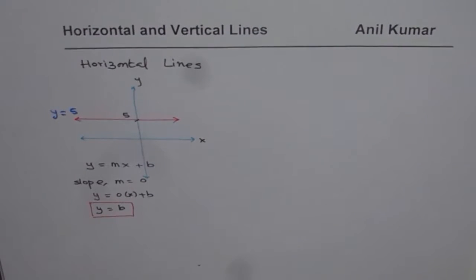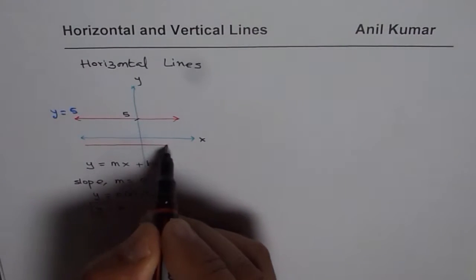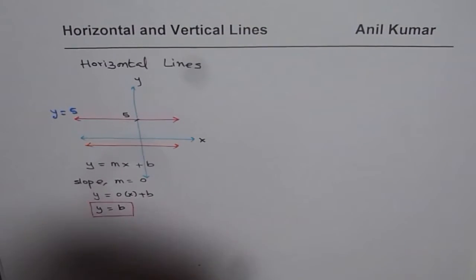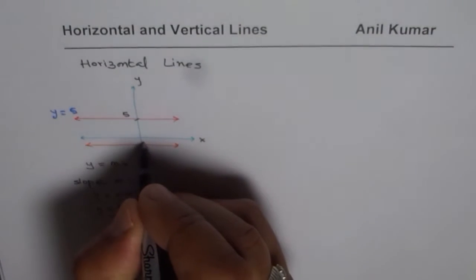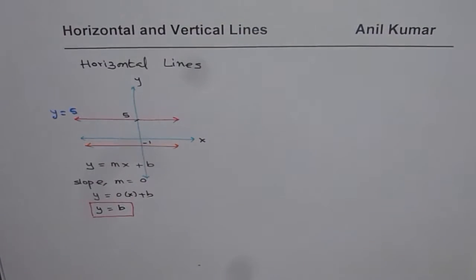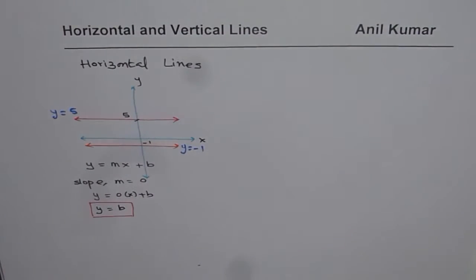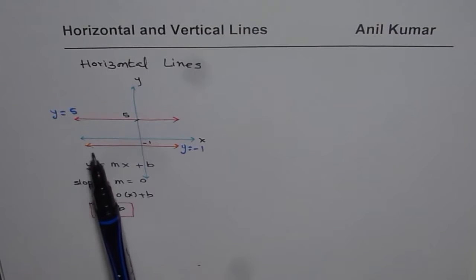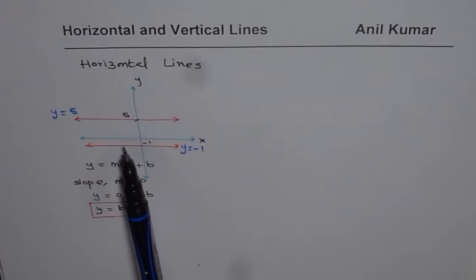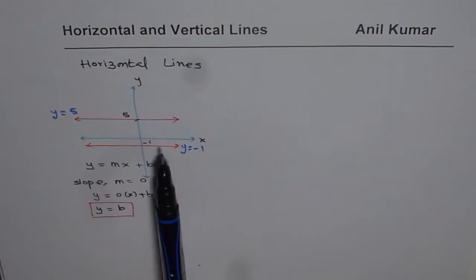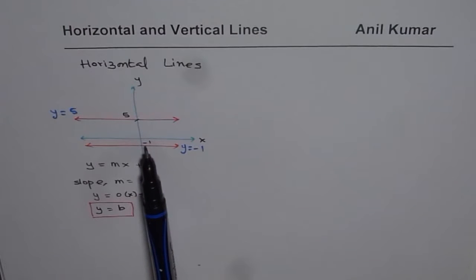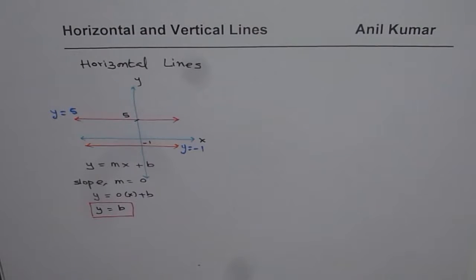So if I draw another line — a horizontal line with y-intercept of minus 1 — the equation will be y equals to minus 1. So for all the horizontal lines, what you notice is that the equation is y equals to y-intercept. That is to say that every point on this line has a y-value equal to the y-intercept, which is minus 1 in the second line and 5 in the first line.